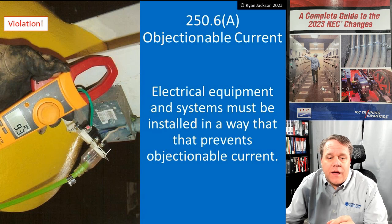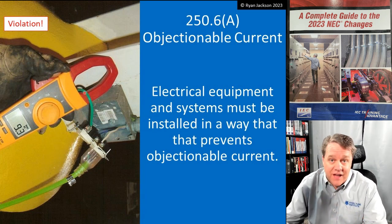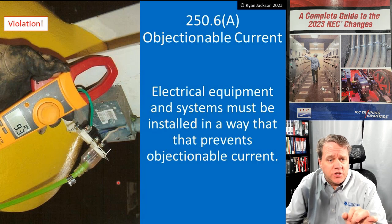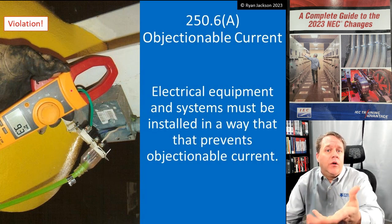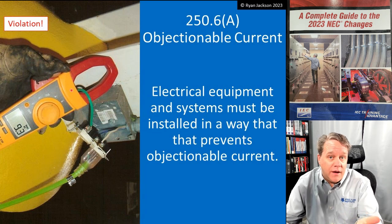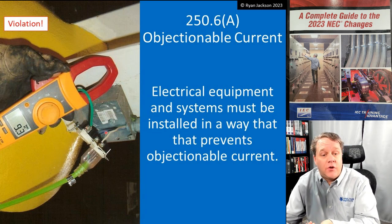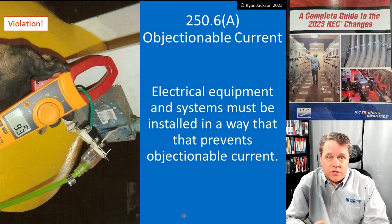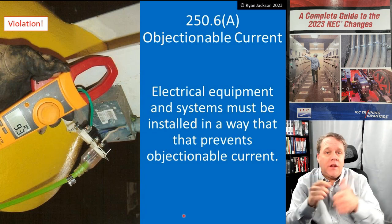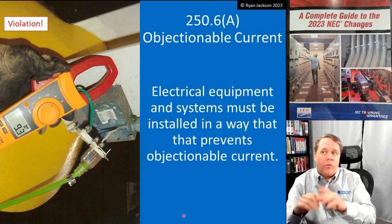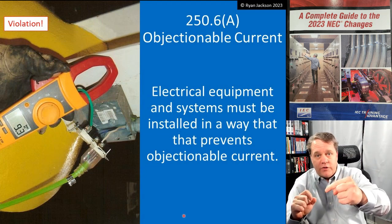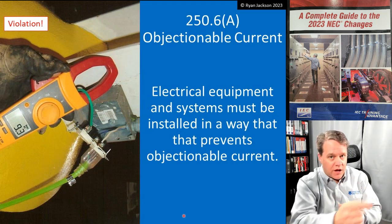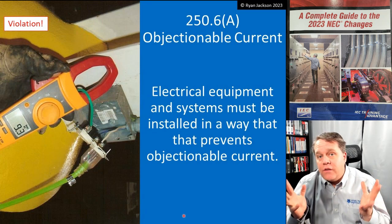Here you have nine and a half amps on the equipment grounding conductor — that is objectionable current, no question. The other photographs from this installation show 19 amps on the hot conductor, 10 amps on the neutral, and 9 amps on the equipment ground — absolutely a code violation. Why would you have 19 amps on the black, 10 on the white, 9 on the equipment ground? Kirchhoff's law says the amount of current leaving the power supply and the amount returning are always the same.